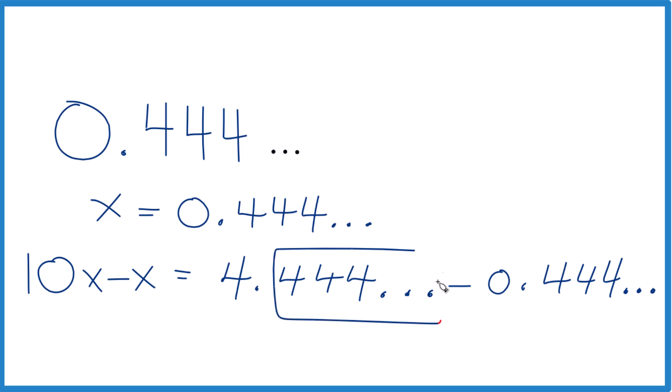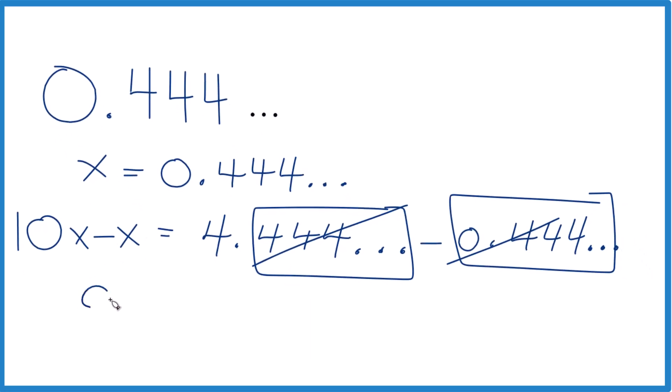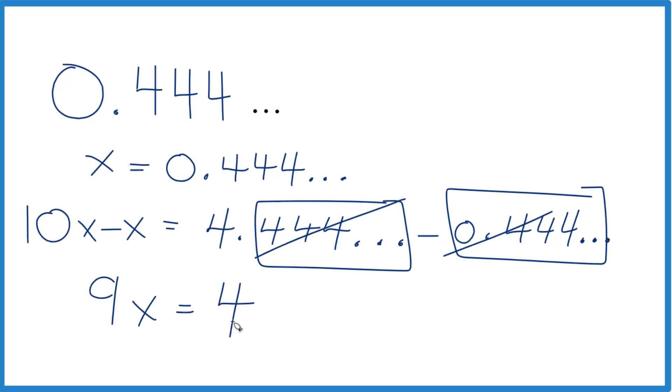Now this here minus this here, they're the same thing. So we get 0, they're gone. And 10x minus x is 9x. So 9x, that equals 4. And now we have whole numbers.